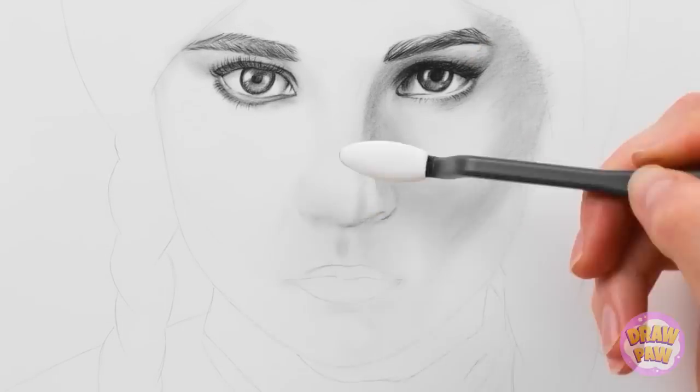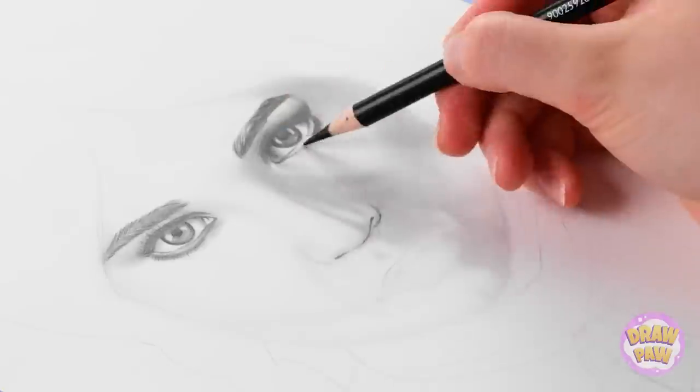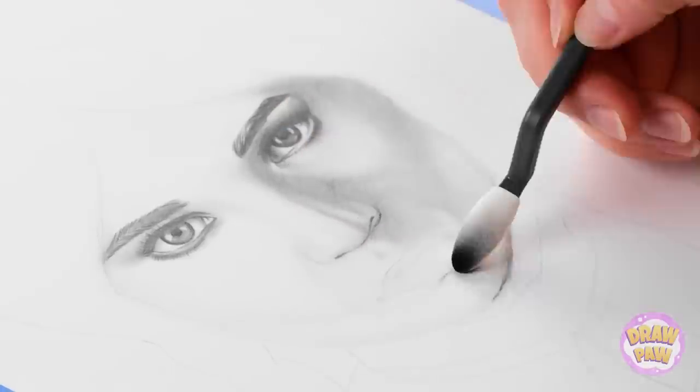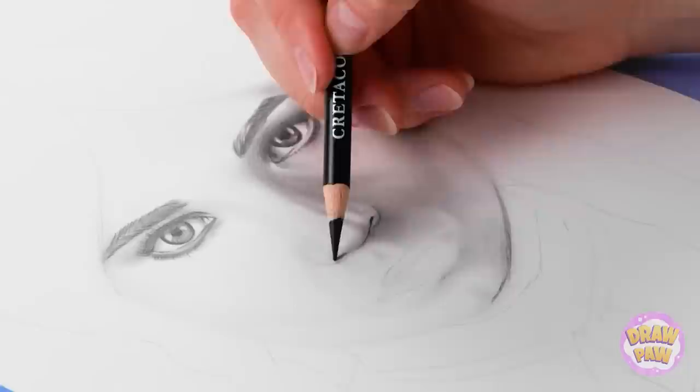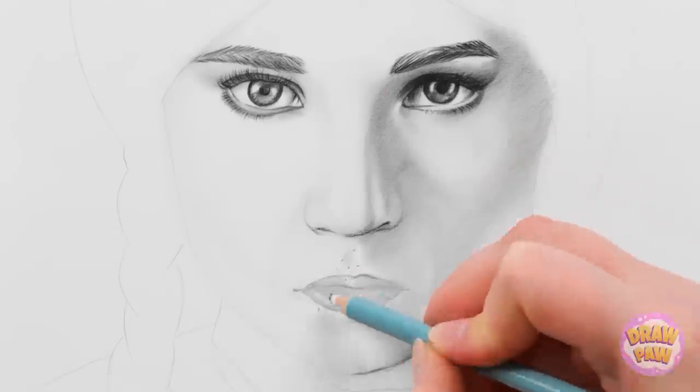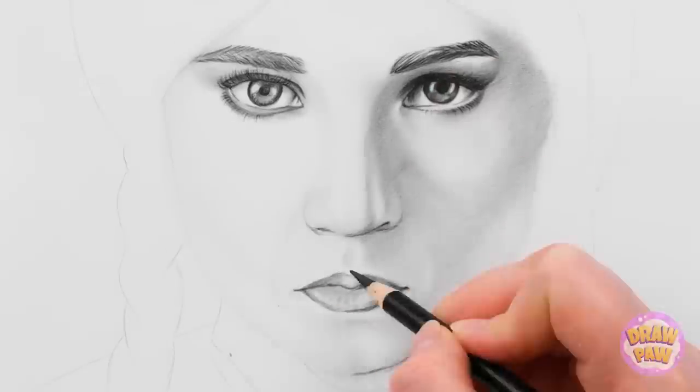Those cheekbones are poppin'! Wow! Now I'll add a little more detail around the eyes. It can't rush perfection. It's really coming together. Next I'll work on the lips. Mixing the light and dark pencils gives depth. It makes it stand out. And the drawing comes to life!